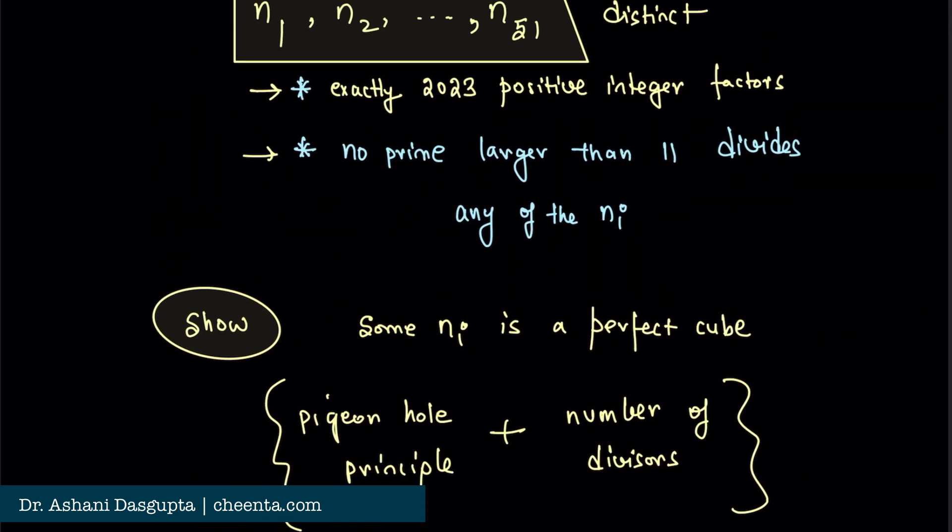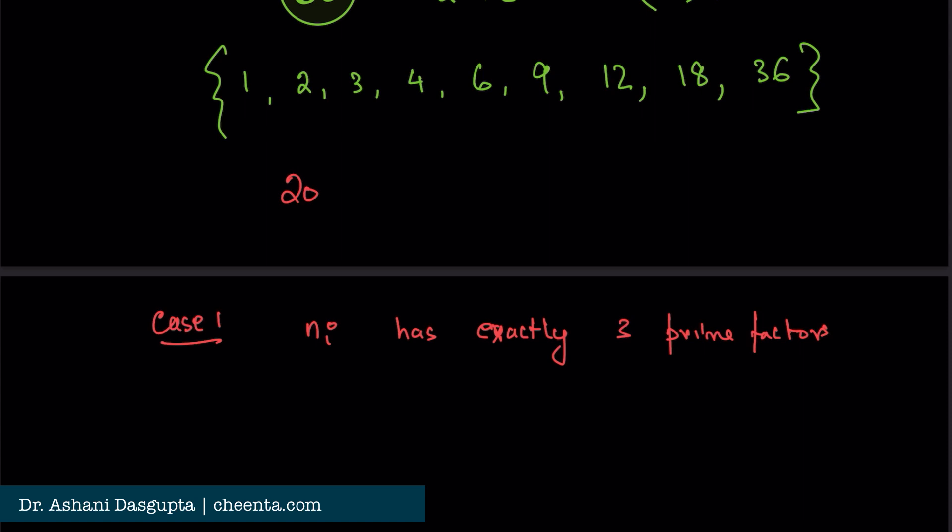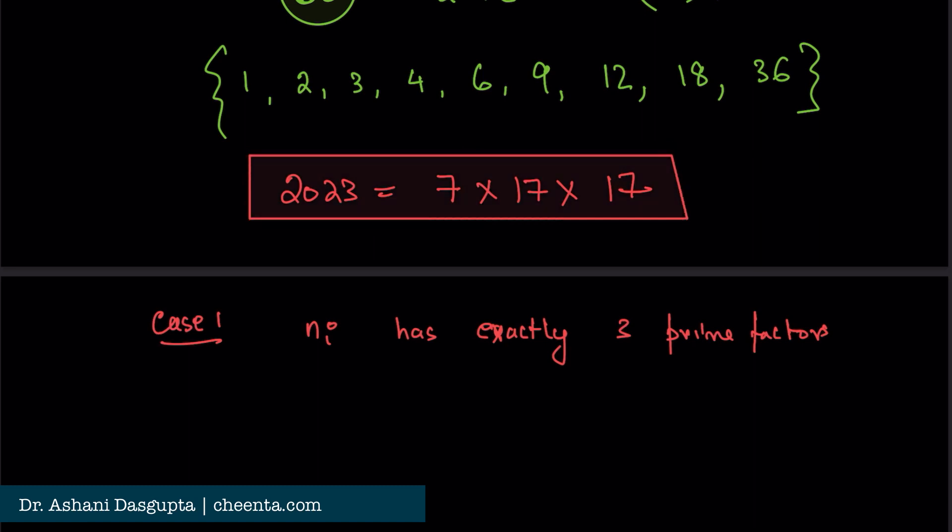Now we know that each of these numbers has exactly 2023 positive integer factors. We will do some case work. Case 1: the number Ni has exactly 3 prime factors. Why do I choose 3? Well, I choose 3 because 2023 is equal to 7 × 17 × 17. This is actually given in the problem as a clue.